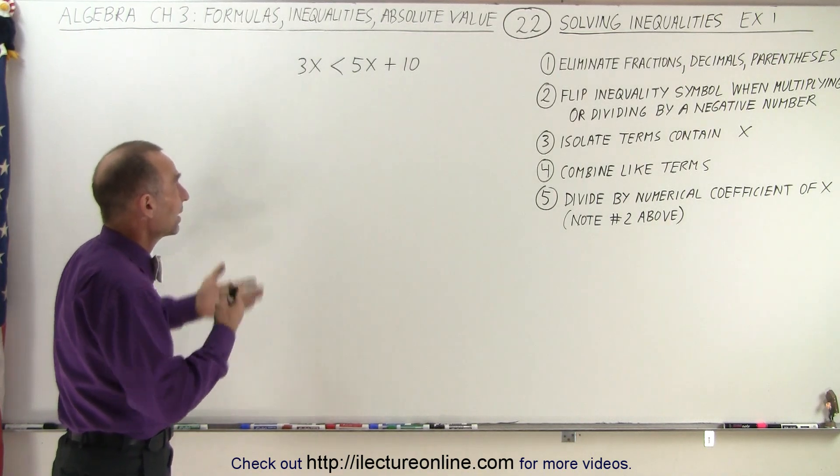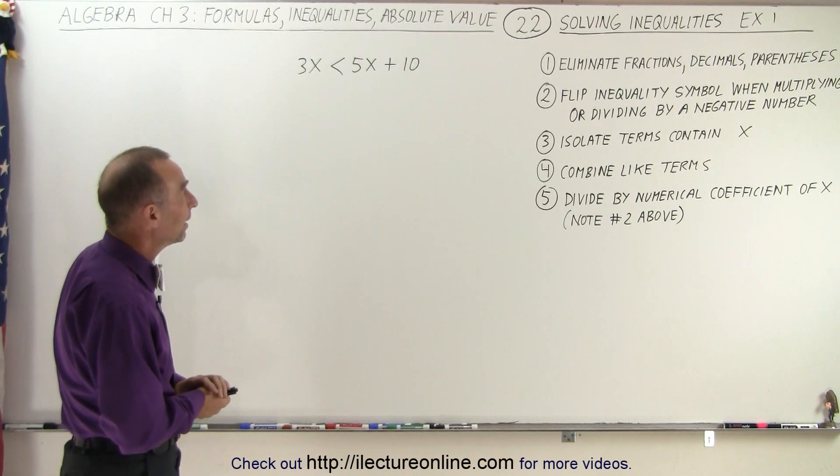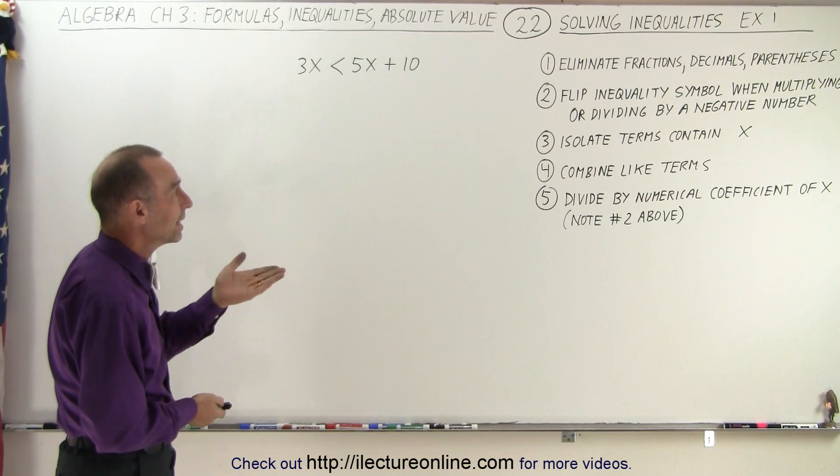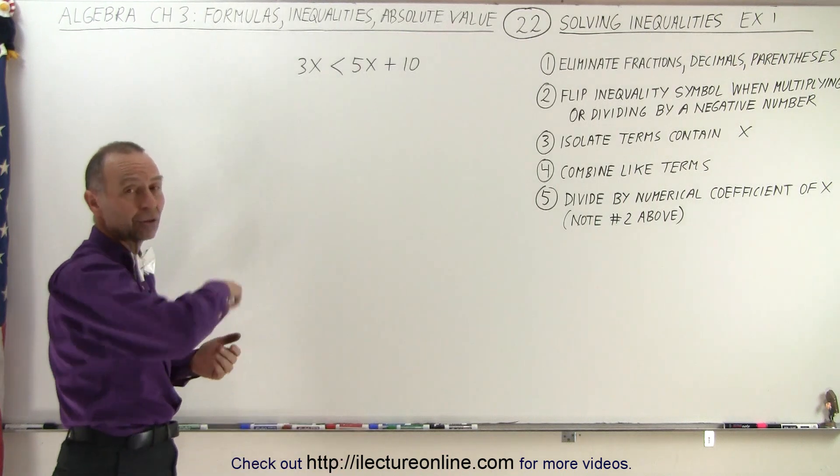We don't have to multiply anything by negative numbers yet, so we can skip that. And now we want to isolate terms containing the x, which means the 5x needs to go to the other side.